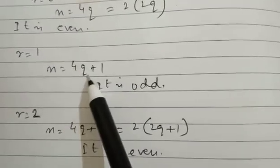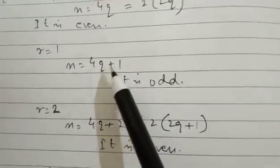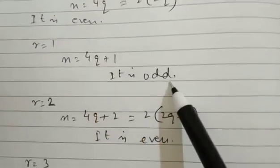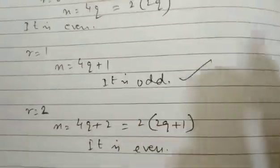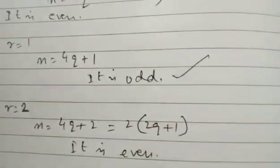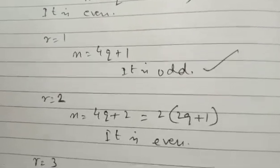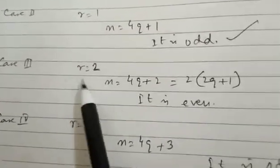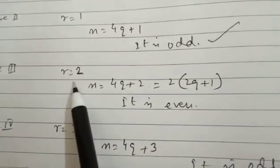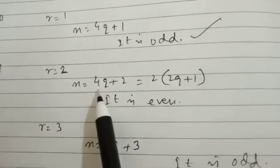In 4q plus 1 we cannot take 2 as a common factor, and so it becomes an odd number. That means it is the first odd number we are getting, of the pattern 4q plus 1.